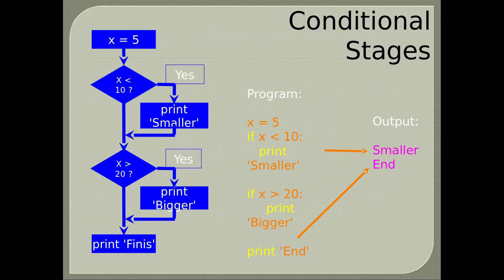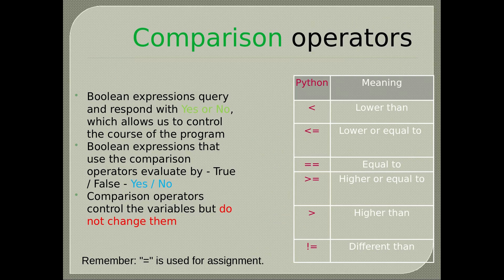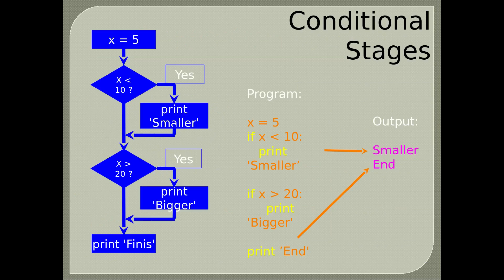Conditional stages example: x = 5. If x is smaller than 10, print 'smaller'. If x is greater than 20, print 'bigger'. Else print 'end'. Output: smaller, end. As you can see, only two of the words were written, since only these conditions were met.